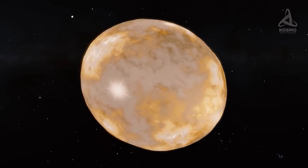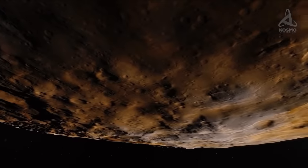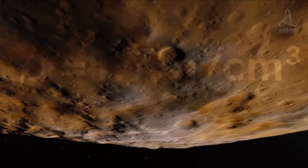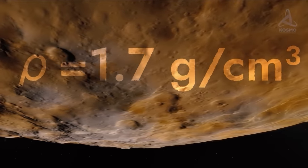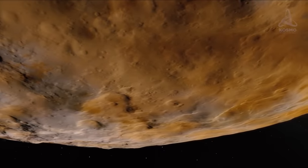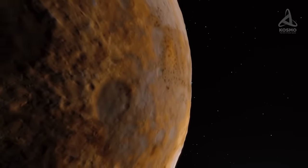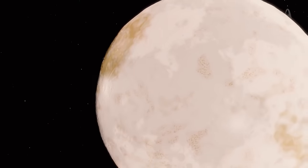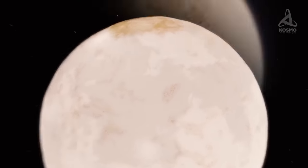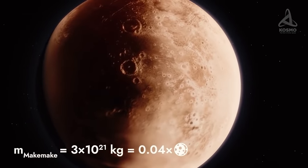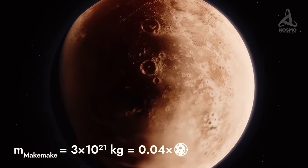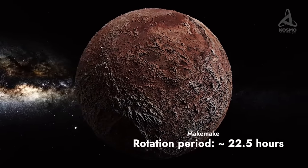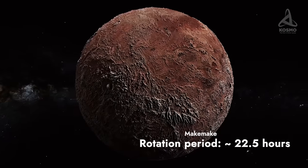Makemake's exact mass still remains to be found out. The planetoid's average density is estimated at approximately 1.7 grams per cubic centimeter, which is slightly lower than that of Pluto. This information allows us to gauge the dwarf planet's mass at roughly 3 times 10 to the power of 21 kilograms. Incidentally, it is 4% that of the Moon. Makemake's rotation period is around 22 and a half hours, which is quite a lot for a dwarf planet.